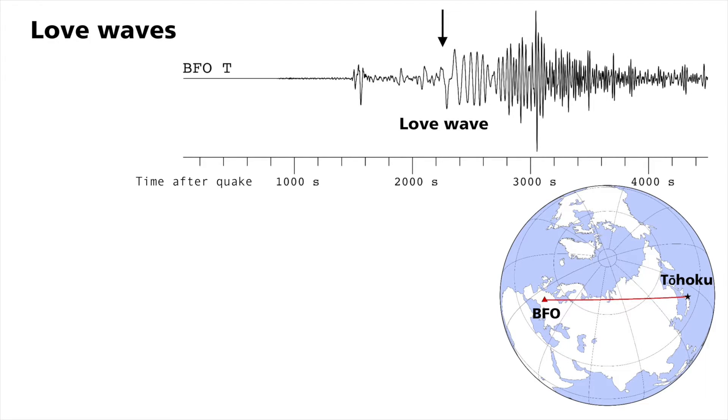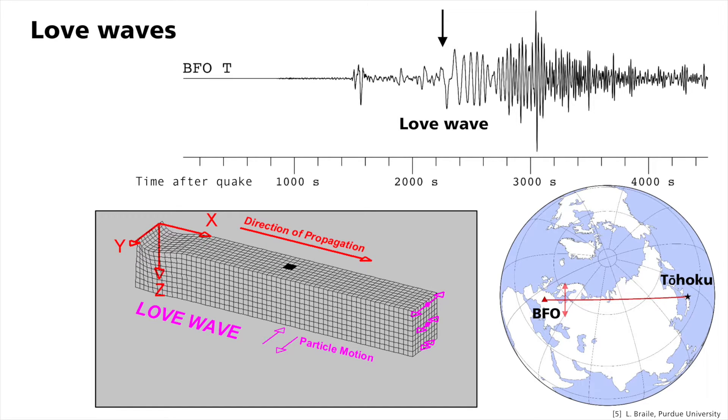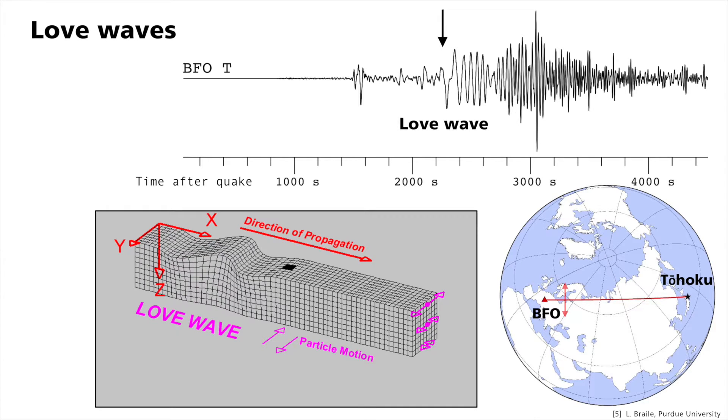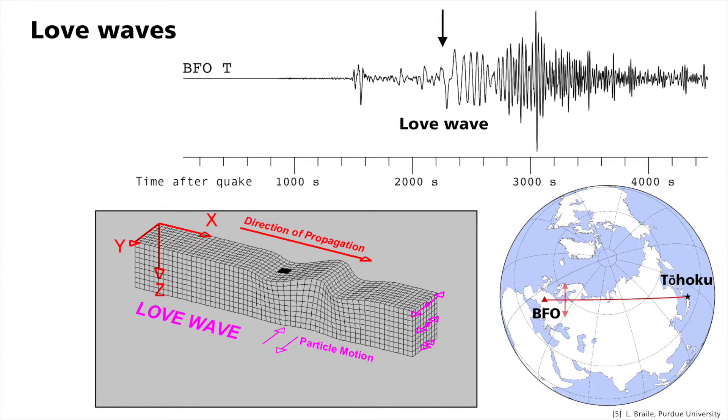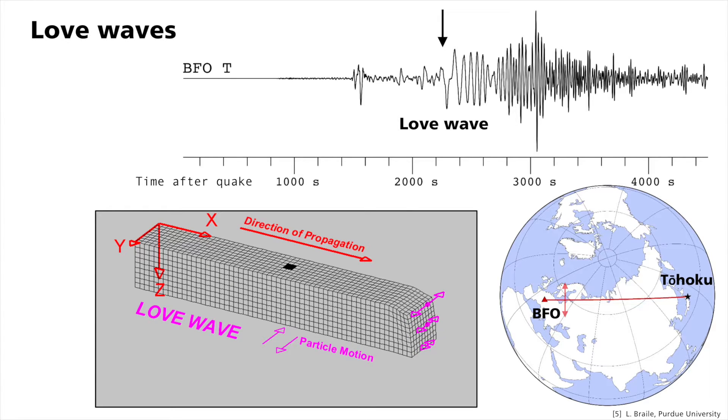The second type of seismic surface waves are Love waves, which are composed of horizontally oscillating transverse waves. The animation shows the shear movement perpendicular to the direction of propagation. In both Rayleigh and Love waves, the amplitude diminishes with depth.